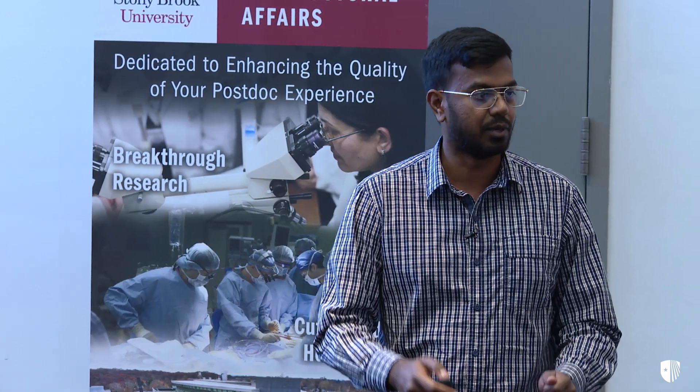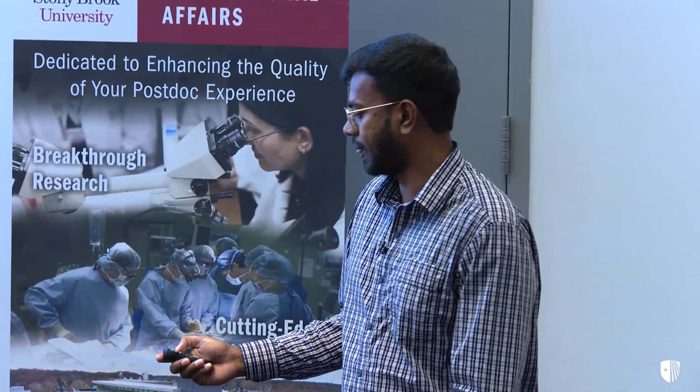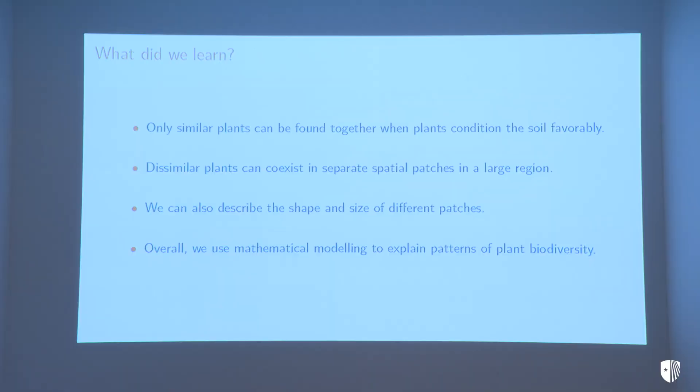But when plants condition the soil — particularly when palms are making the soil browner because that's what they like, and pines are making the soil greener because that's what they like — you start seeing patches. Forests get patchy, so you get a patch of palm trees and a patch of pine trees, and these patches change in shape and size. We can tell how these shapes change based on the characteristics of the plant: how far they disperse seeds, how they compete with other plants, and so on. So when plants condition the soil, you only see similar plants together, but dissimilar plants appear in separate patches, and we can also describe the shape and size of those patches.